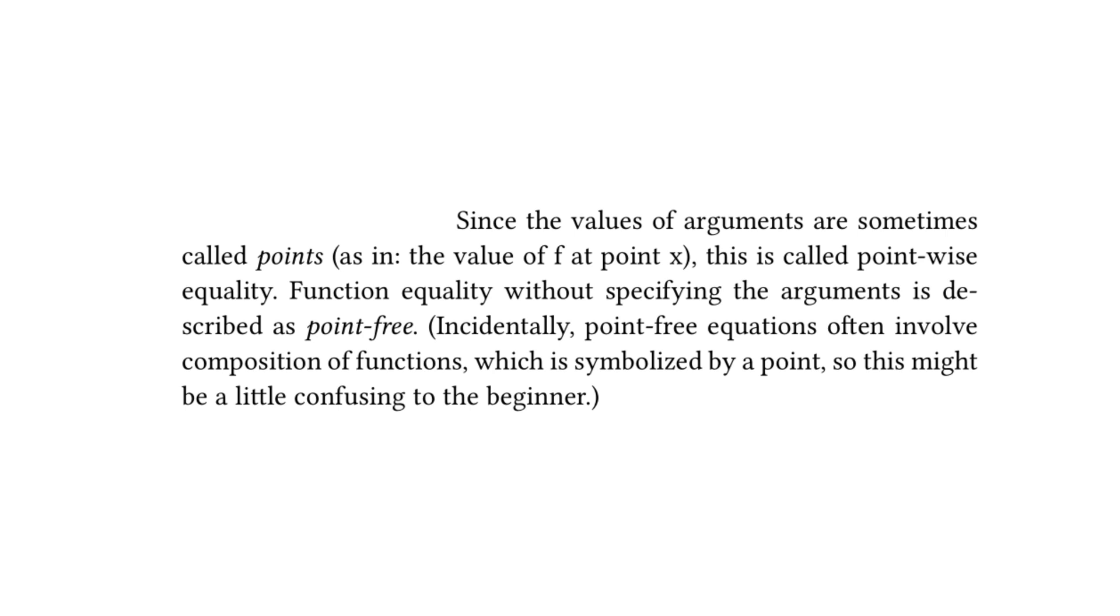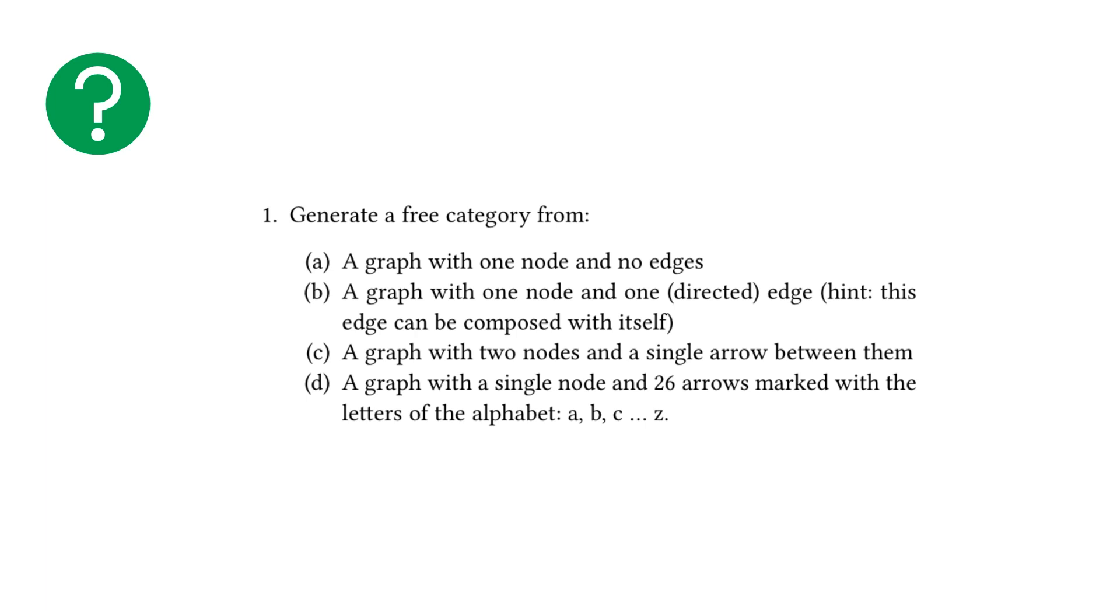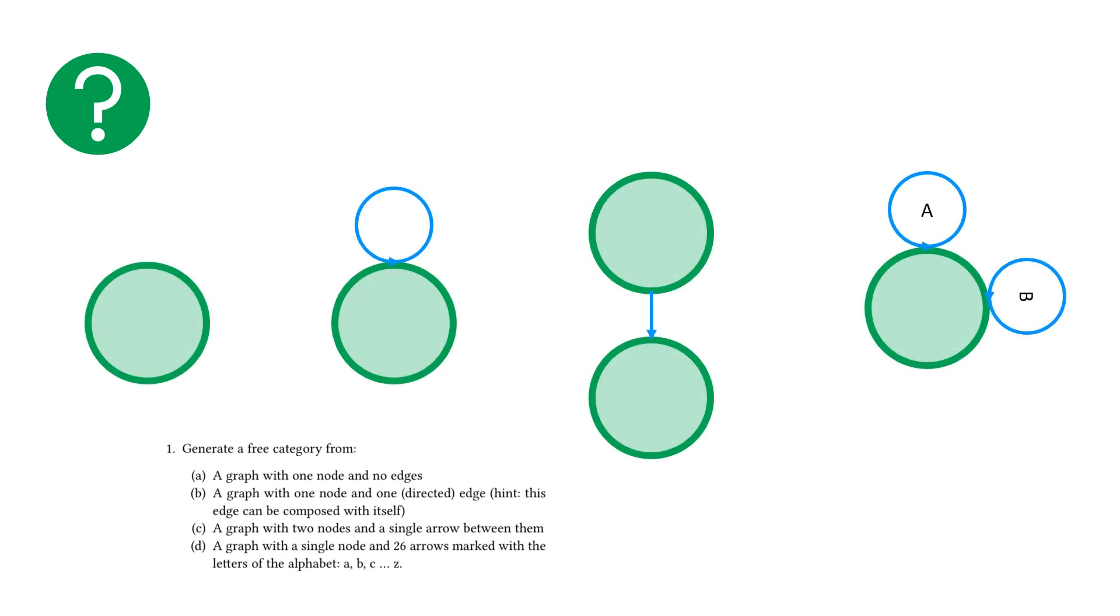Moving on to the challenges section, we're going to cover four of the exercises very quickly. So the first one reads, generate a free category from A, a graph with one node and no edges, B, a graph with one node and one directed edge, hint, this edge can be composed with itself, C, a graph with two nodes and a single arrow between them, and D, a graph with a single node and 26 arrows marked with the letters of the alphabet, A, B, C, and Z. So visually, this is what these look like. Note for the final one, I didn't draw all 26 letters because one, that's going to be crazy, and two, I don't have the time to animate it that well. But we'll go through them one by one.